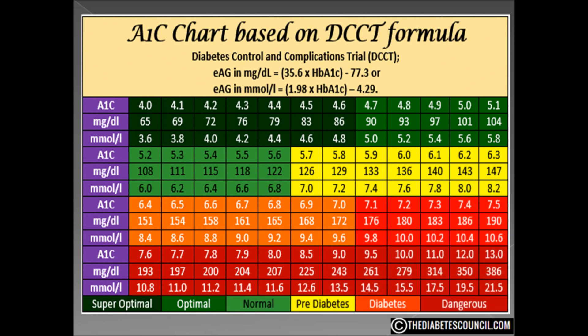Diabetes affects approximately 30 million Americans today, that is nearly 10% of the population. Diabetes is a disorder of the endocrine system. With diabetes, blood sugar levels stay high because either the pancreas can no longer produce enough insulin, or the cells of the body are resistant to insulin and the pancreas can't keep up. Either way, the glucose or sugar level in the bloodstream becomes too high and the body cannot properly function.